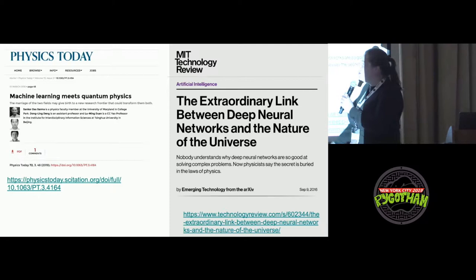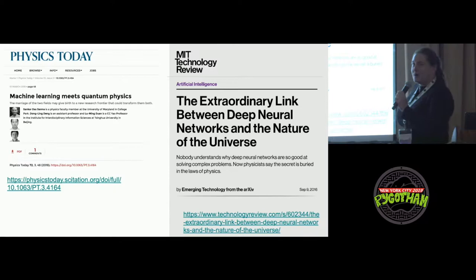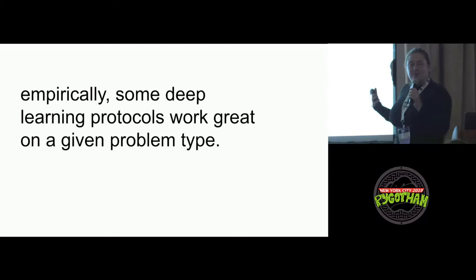So what these articles are talking about. There's a Physics Today article, quite recent, March this year, something about machine learning meeting quantum physics. And the right one is actually a few years old already, and that's very dramatic. Something about deep neural networks and the nature of the universe sharing links or something. That's really something physicists love. So I'm going to talk a little bit about what these people mean.